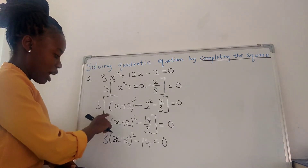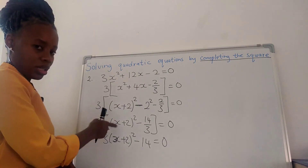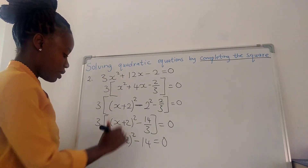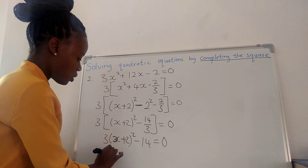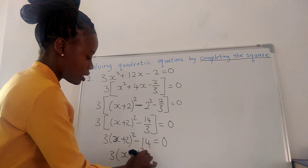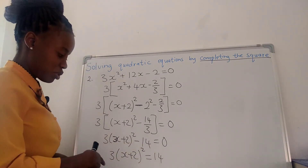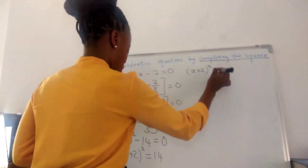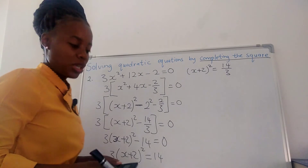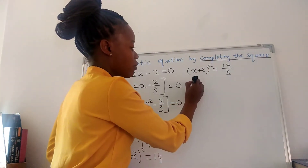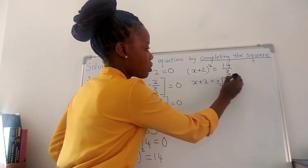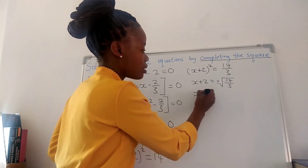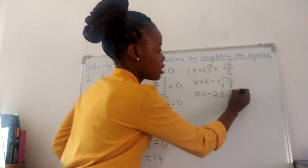This 3 was outside the big bracket. Now we're removing the bracket, so 3 times this gives us 3x plus 2 squared, and 3 times negative 40 over 3 is negative 40. We're going to solve for x. We take negative 40 to the other side. We're going to have 3x plus 2 squared equals to 40. We divide by 3 both sides, so x plus 2 squared equals 14 over 3. We take the square root, so x plus 2 equals plus or minus square root of 14 over 3. We take 2 to the other side — it was positive, now it's negative. So x equals negative 2 plus or minus square root of 14 over 3.